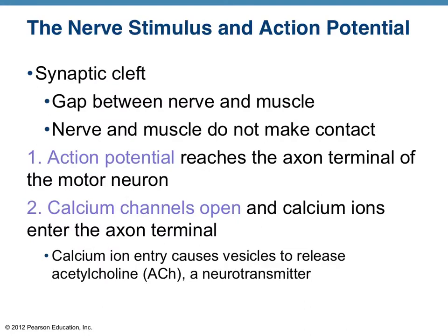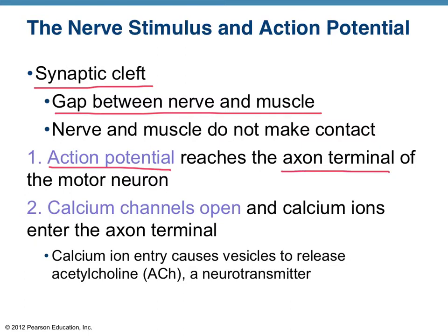In discussing what actually happens at the end of a neuron and the beginning of a muscle cell to contract, we first talk about the synapse, or the synaptic cleft — that's the gap between the nerve and the muscle. They don't actually make contact; there's a space, but some really important events occur there. The first thing: you've got the impulse or action potential flowing down the neuron, and when it reaches the axon terminal, that stimulates the opening of calcium channels, and the calcium ions flood into the axon terminal.